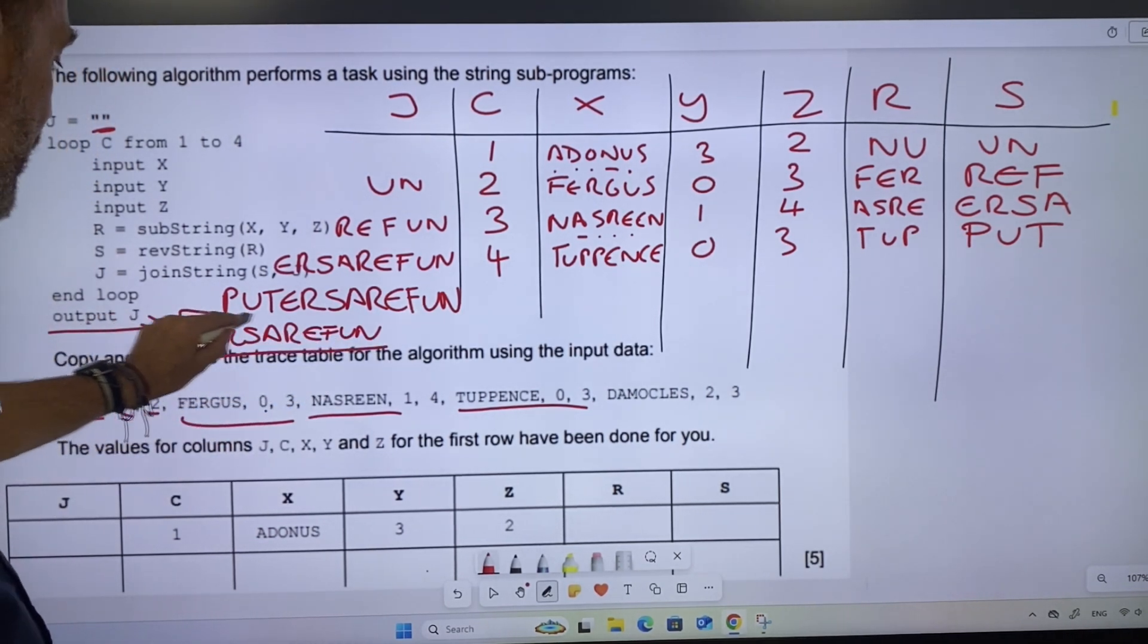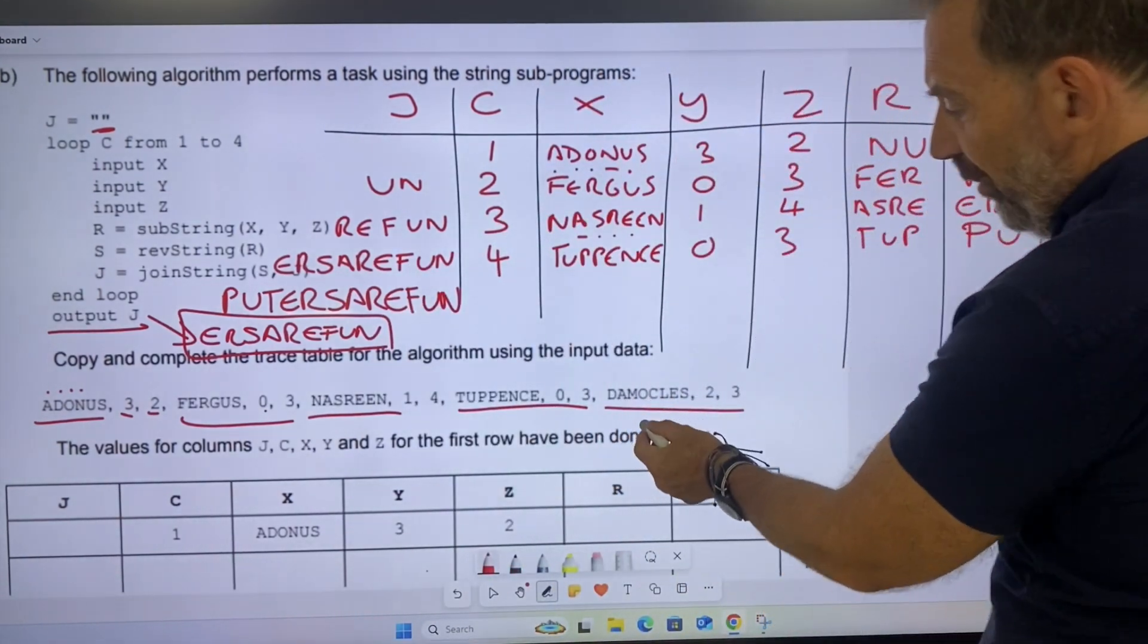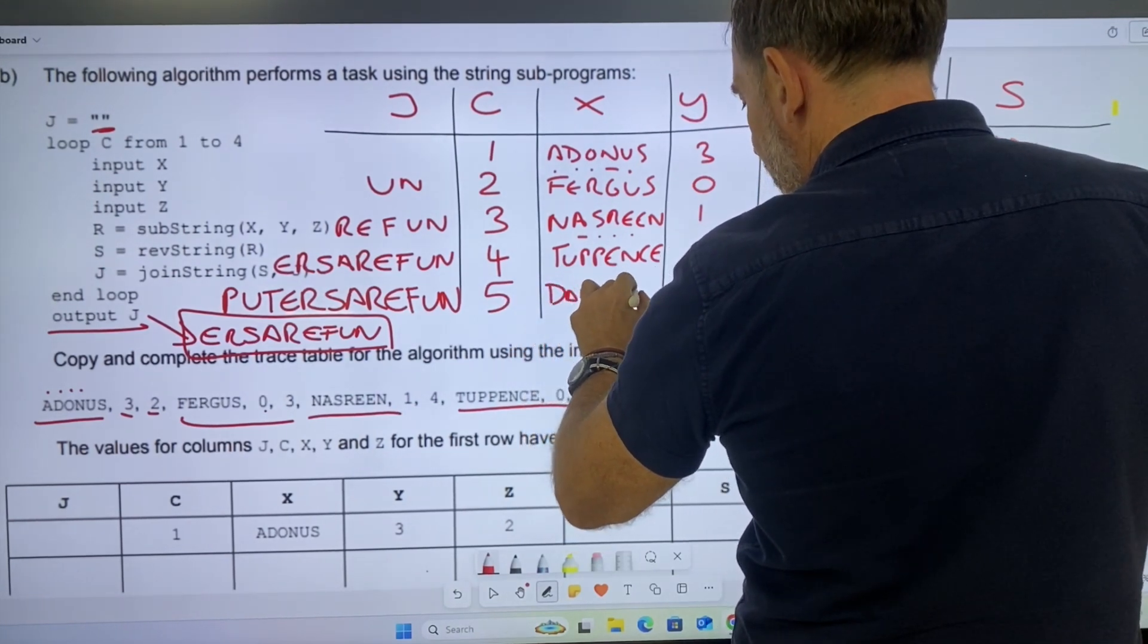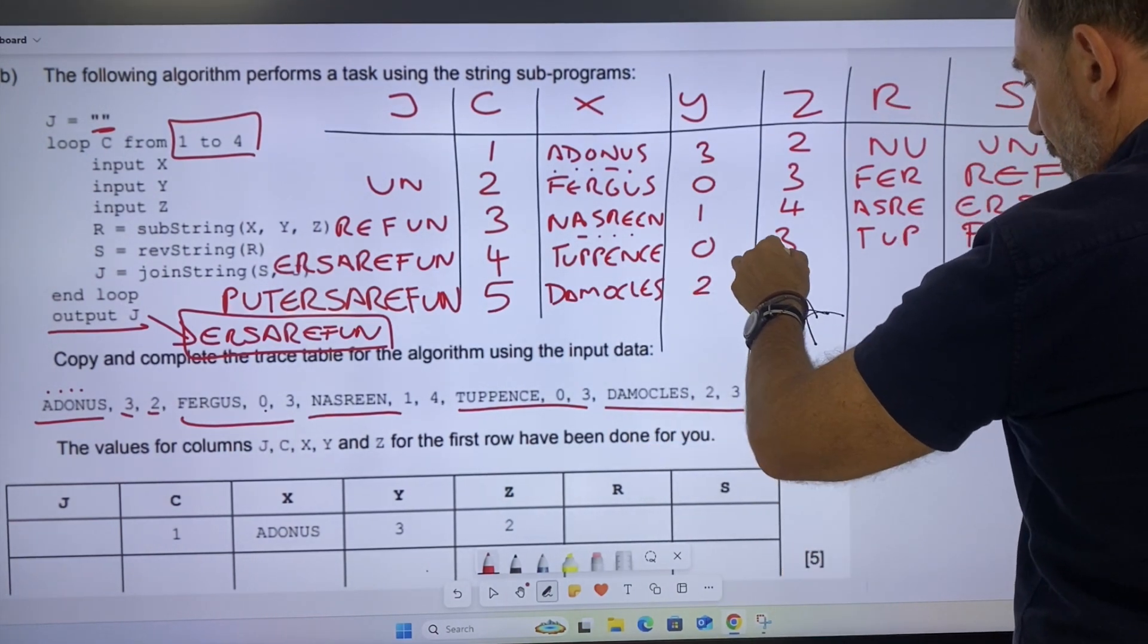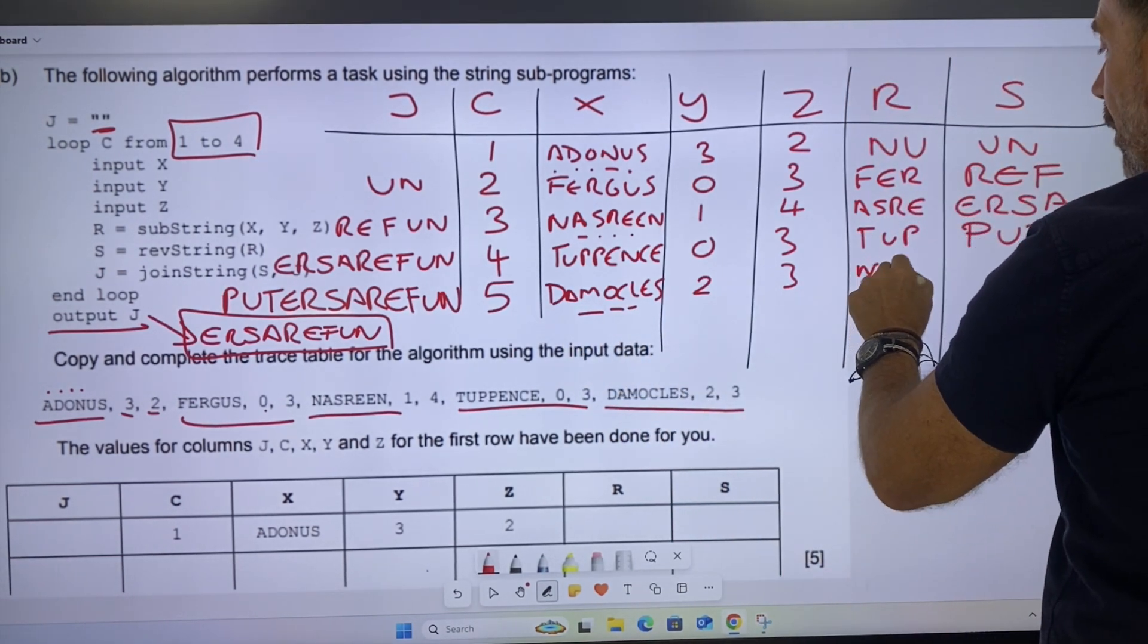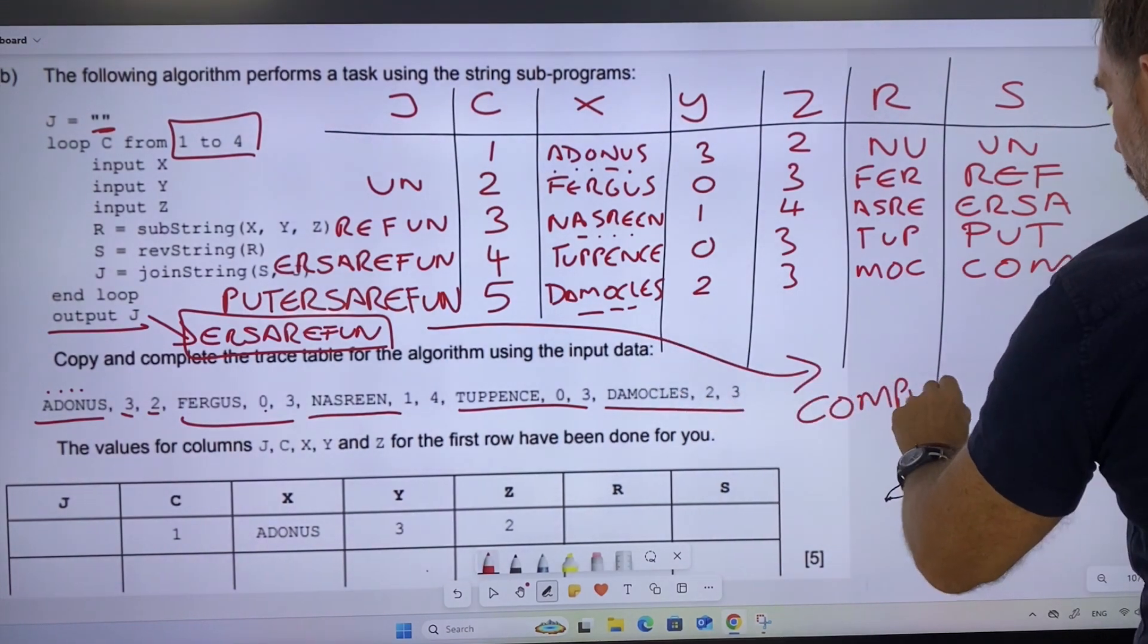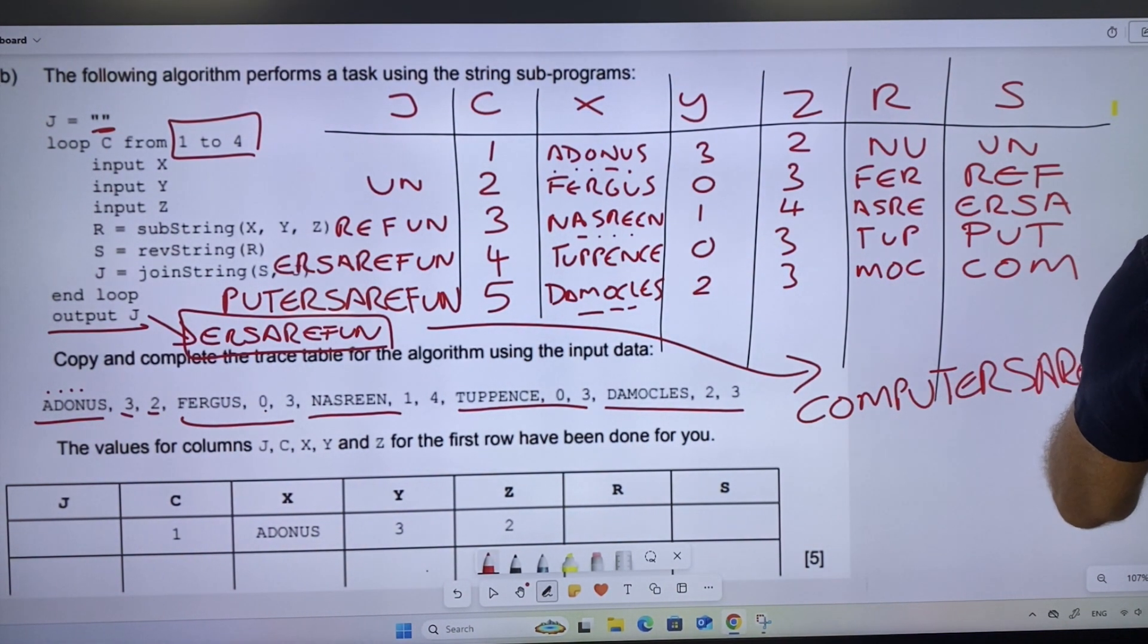So that would be the end of the question. Just to add, I'm assuming it's computers or something is fun. Let's have a little look. So if I go five, which we don't need, and we go D-A-N-O-C-L-E-S. Don't fall into the trap. Remember, we've got that there. So two, three, so we're going to take three letters: M-O-C, C-O-M. So it would be C-O-M-P-U-T-E-R-S-A-R-E-F-U-N. Computers are fun.